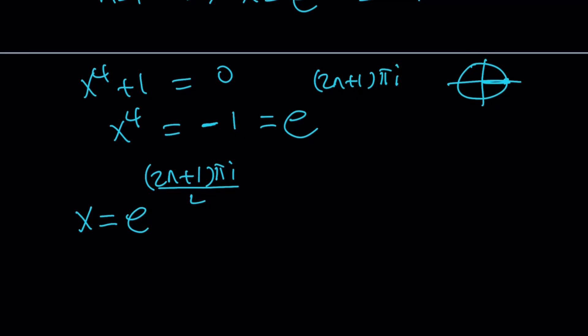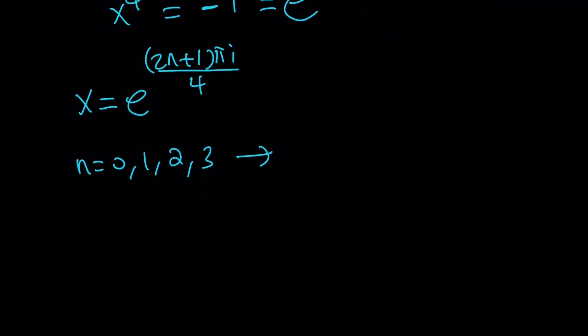And then, replace n with 0, 1, 2, and 3 to find the fourth roots. There's going to be four of them. So if you go ahead and list them, it's going to look like this.